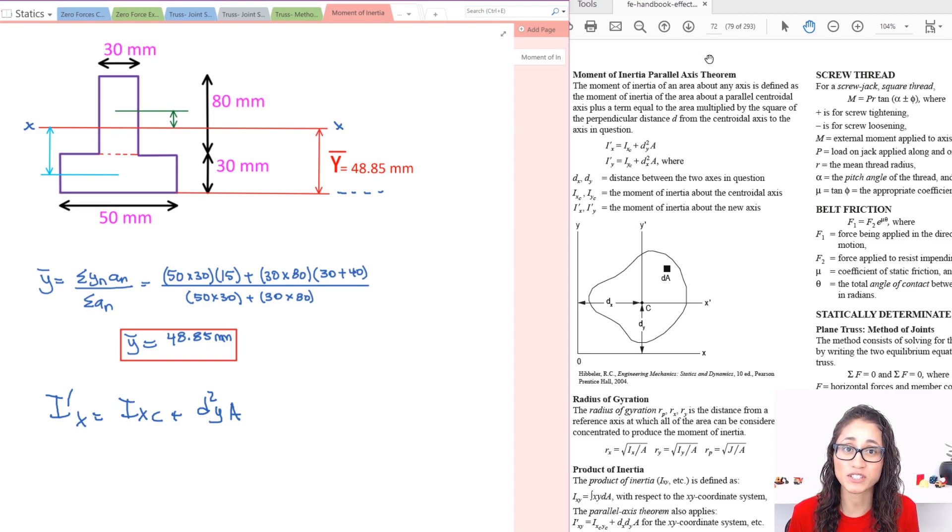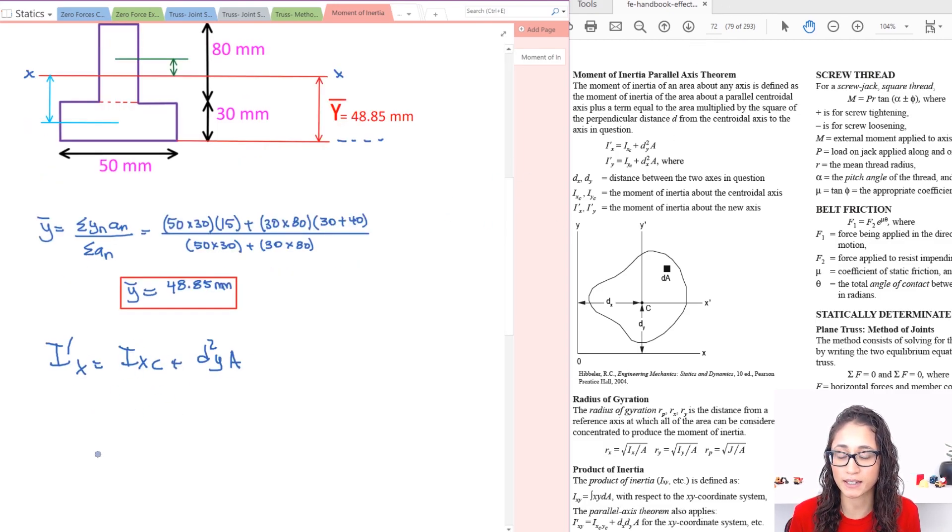So the equation is on page 72 on the reference handbook. So let's start with i-axis. So just like we did in the previous problem, we're going to actually divide this into two parts. So we have part 1 and then this is part 2, and we're going to solve the moment of inertia the same way. We're going to do the first part and then we're going to add the second part.